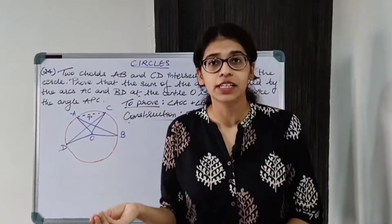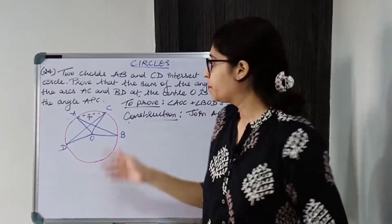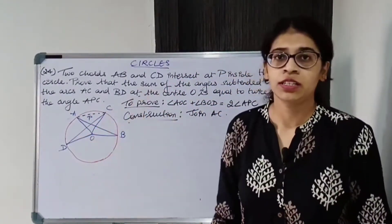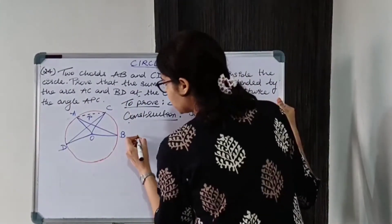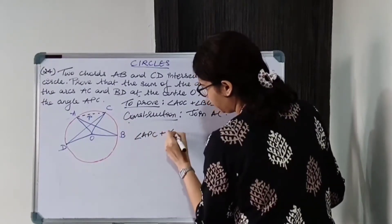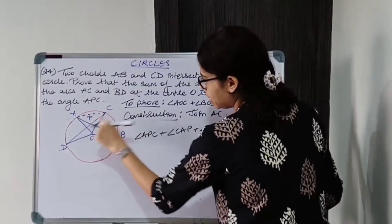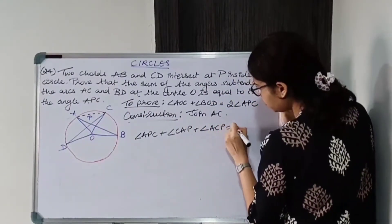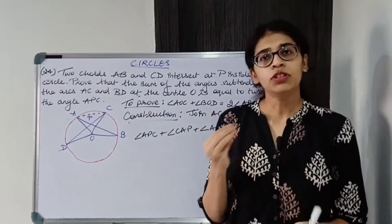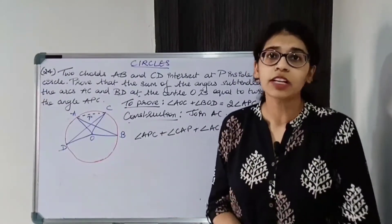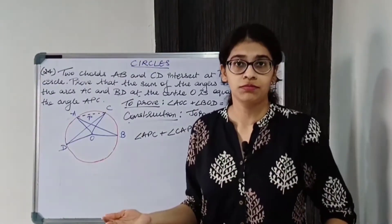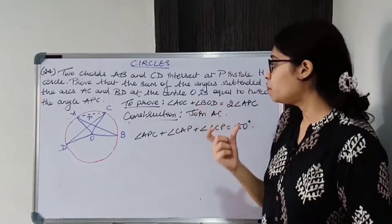Now let us see some property. The sum of measures of angles of a triangle is equal to 180 degrees. So angle APC plus angle CAP plus angle ACP equals 180 degrees. Now I need to find values for CAP and ACP. There are no direct values, so I need to relate these angles somehow to AOC and BOD.